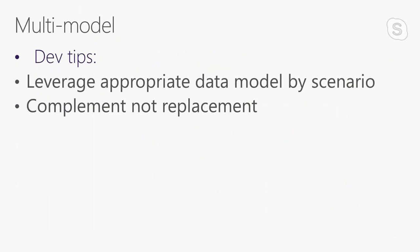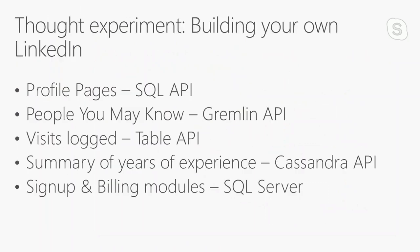Here's a thought experiment: if I were building my own LinkedIn, here's how I'd approach the MVP. I'd use the SQL API for profile pages and posts. For researching people I may know, I'd use the Gremlin API to traverse the graph. To log visits, I'd use the Table API. For summary calculations on years of experience, I'd use Cassandra. And for sign-up and billing — because I want them transactional — I'd actually use SQL Server. There's no good or bad answer; use Cosmos DB and complementary technologies in appropriate scenarios.